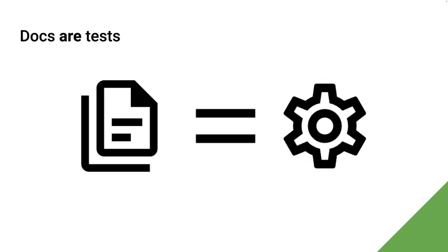The core principles of docs as tests: first, docs are tests. Documentation asserts that a product behaves a particular way, and you can validate that assertion by stepping through that behavior in the product — therefore it's testable. If A equals B and B equals C, A equals C: docs are tests. And if you don't run those tests yourself, your users will do it for you. And that ends badly.